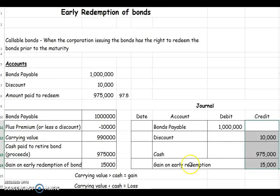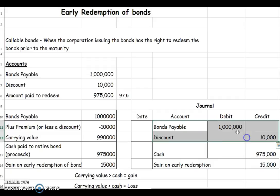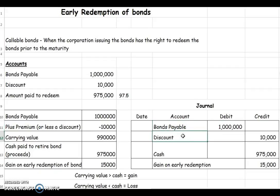You'll want to remember to calculate it this way, but you'll also want to know how to put it into a journal entry. Let's talk about where each of these accounts belong on our financial statements. Bonds payable and discount, before we redeemed these, would have been on your balance sheet — side by side or up and down next to each other. Bonds payable would have been reduced by the discount, and cash of course would also be on your balance sheet.